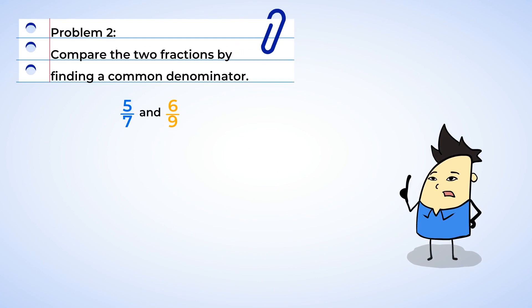Compare the two fractions by finding a common denominator. For this next problem, we need to compare five-sevenths and six-ninths by finding a common denominator. Well, we can use what we learned about the least common denominator to help us find a common denominator and compare these two fractions. We start by listing multiples of each of the denominators. Let's start with seven and list the first ten multiples.